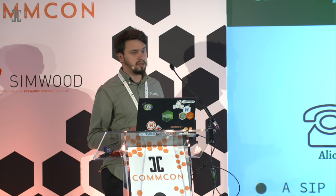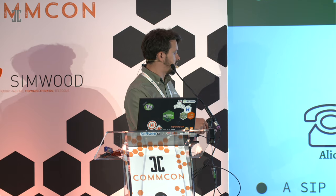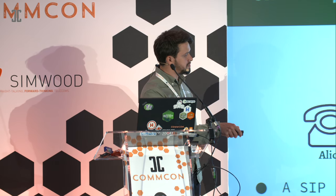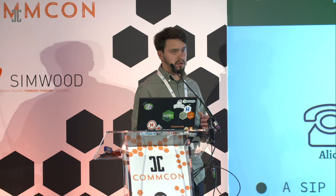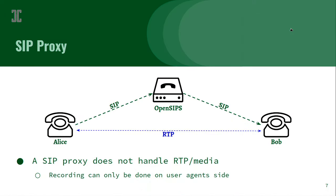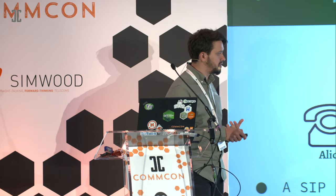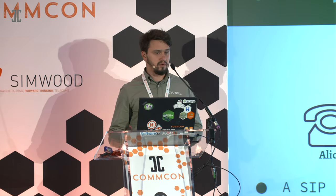Which means that the call flows look something like this. So we have SIP going through OpenSIPS, but the RTP is going directly between the clients. In terms of call recording, that's a bumper — at least from the platform perspective — because call recording can only be done on the endpoints.